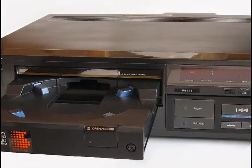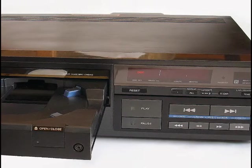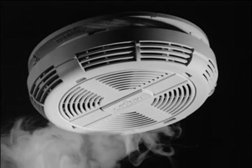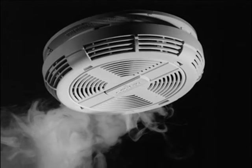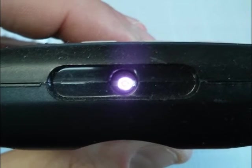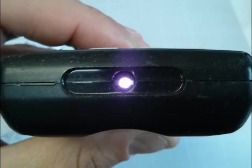Photodiodes are used in consumer electronics devices such as CD players, smoke detectors, and receivers for infrared remote control devices used to control equipment from televisions to air conditioners.